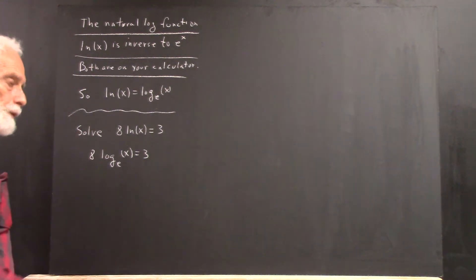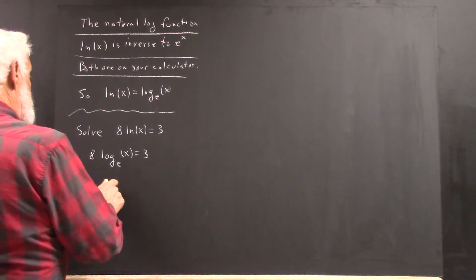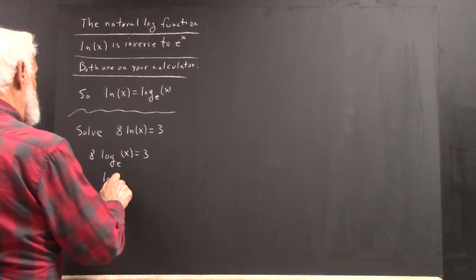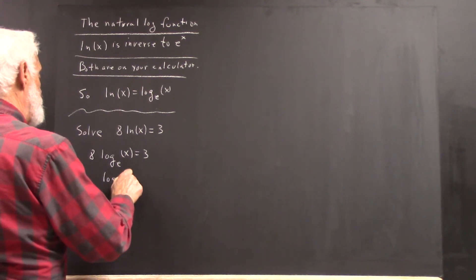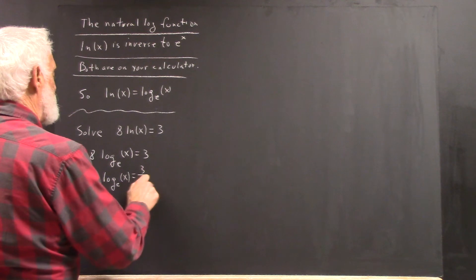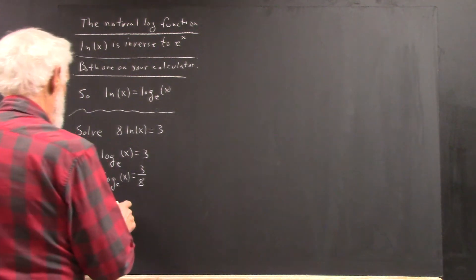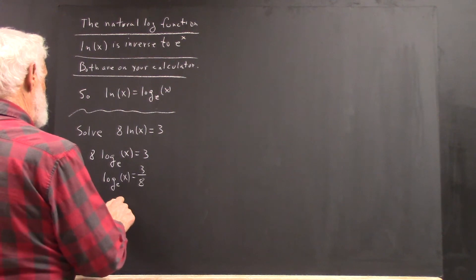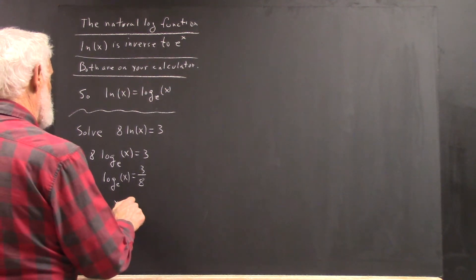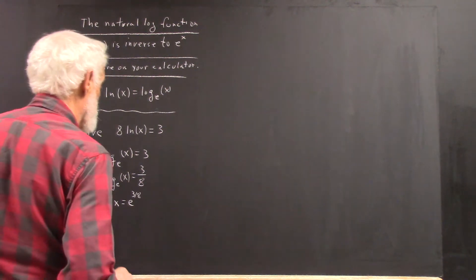How do we solve this just as we can solve it if it was a base 2 or a base 8 or a base whatever? We first put this in the form log to the base e of x equals 3 over 8. And then we convert it to exponential form, which says that x equals e to the 3 eighths.